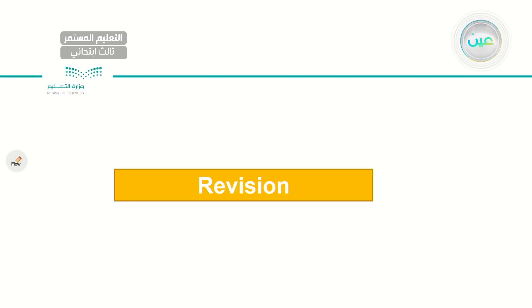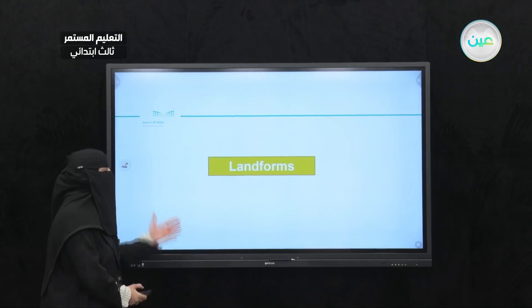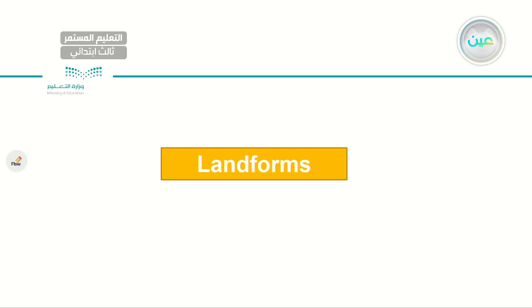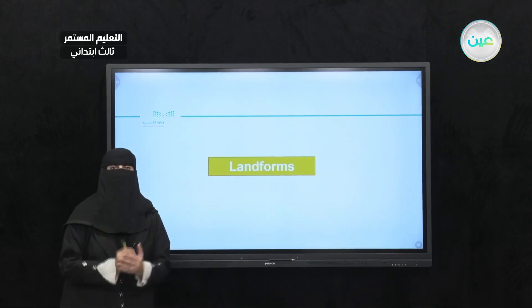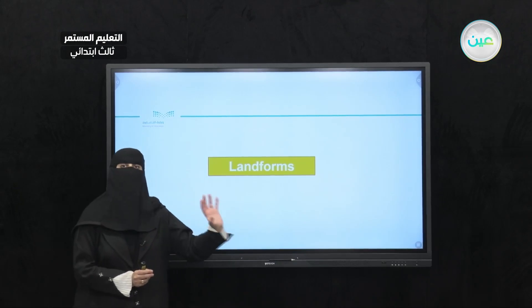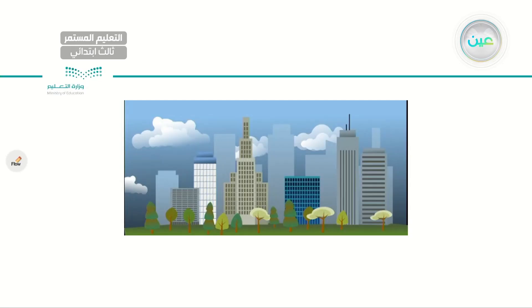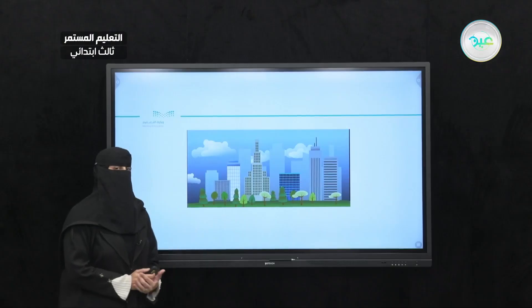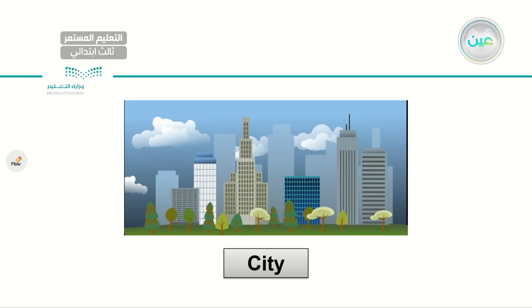This is a general revision, so in case you've missed any of the lessons before, this is your chance. Let's start by naming landforms. What do we mean by landforms? We introduced this in a very interesting passage when we talked about Yembo, which is a very important port. Can you tell me, what is this? Excellent — it's a city. Let's read together: city. Can you give me names of different cities in Saudi Arabia? Jeddah is a city. Riyadh is a city. Tabuk is a city.